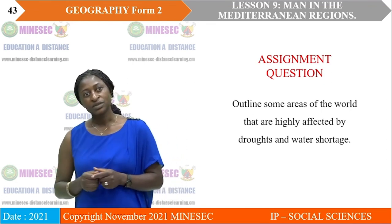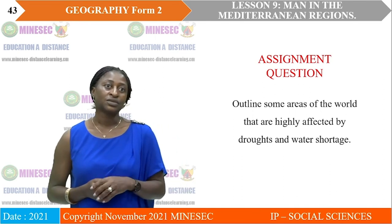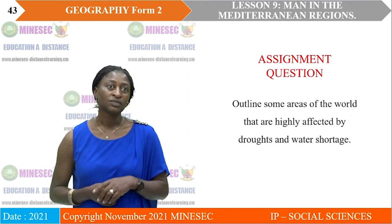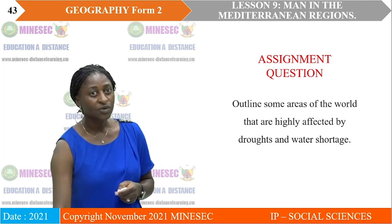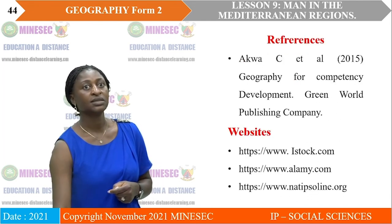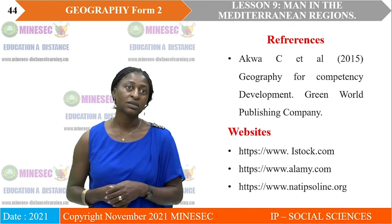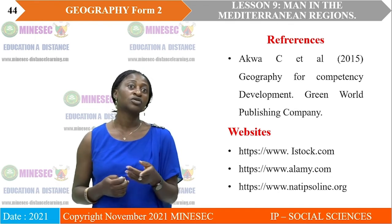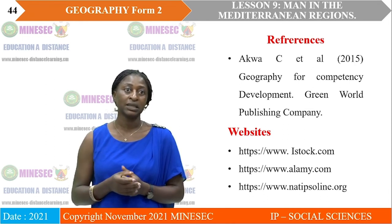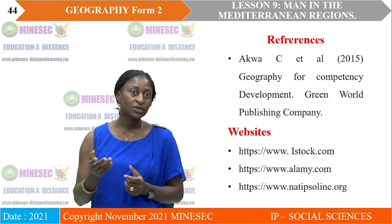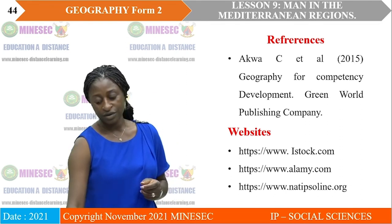We cannot go without an assignment, so the question is: outline some areas of the world that are highly affected by drought and water shortage — we are going to look at that in our next class. We look at the different references: Aquan, Constance and Arts, 2015, Geography for Competency Development, Green World Publishing Company. We also have the different websites: eastern.com, alma.com, and nationalsunlight.org.